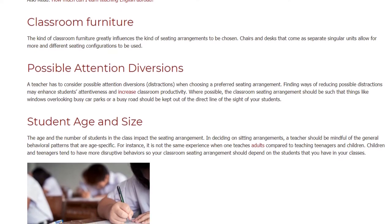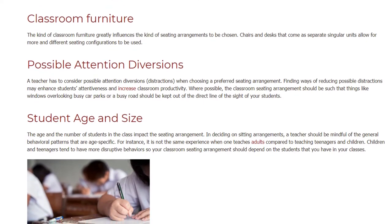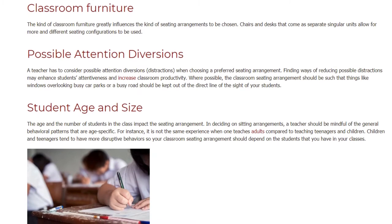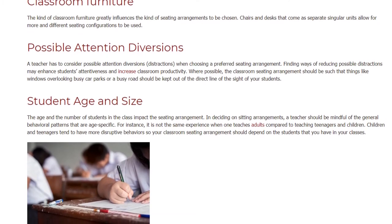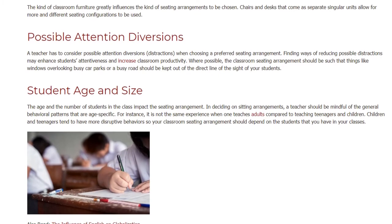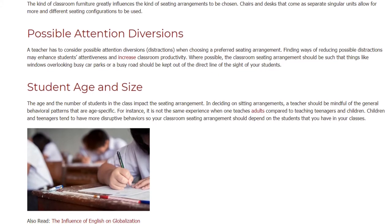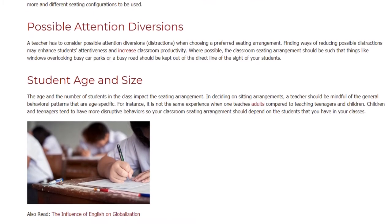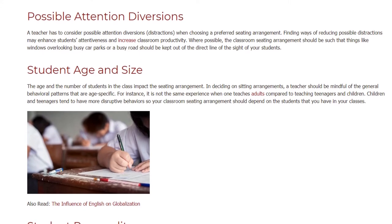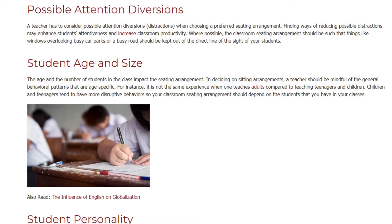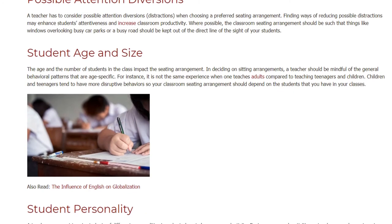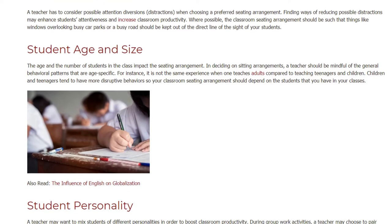Student age and size: the age and number of students in the class impact the seating arrangement. In deciding on seating arrangements, a teacher should be mindful of the general behavioral patterns that are age-specific. For instance, it is not the same experience teaching adults compared to teaching teenagers and children. Children and teenagers tend to have more disruptive behaviors, so your classroom seating arrangement should depend on the students that you have in your classes.